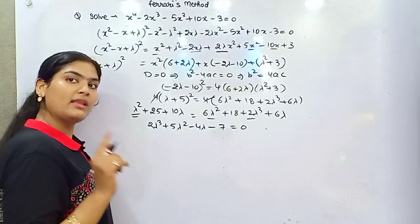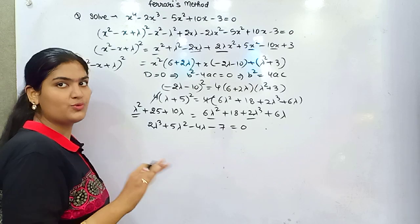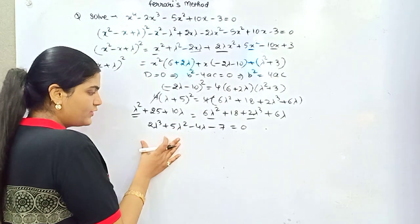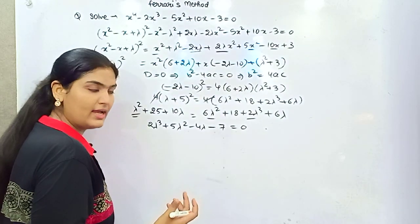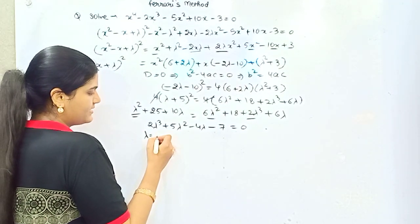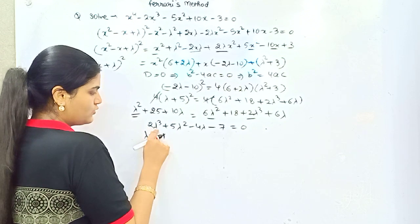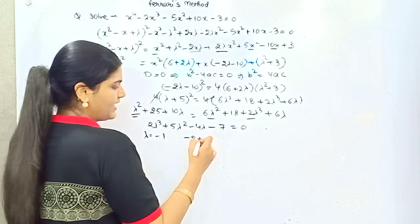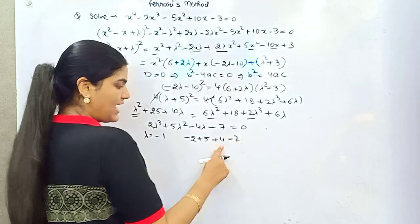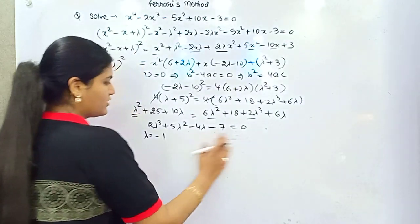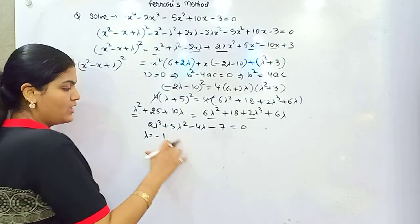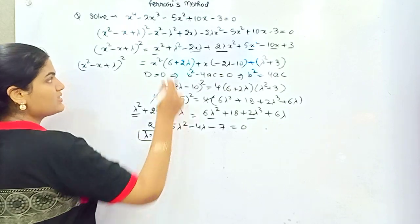You need to find one root in the most simplified form. By hit and trial, try lambda = minus 1: we get minus 2 plus 5 plus 4 minus 7, which is 9 minus 9 equals 0. So lambda = minus 1 is a root of this equation.